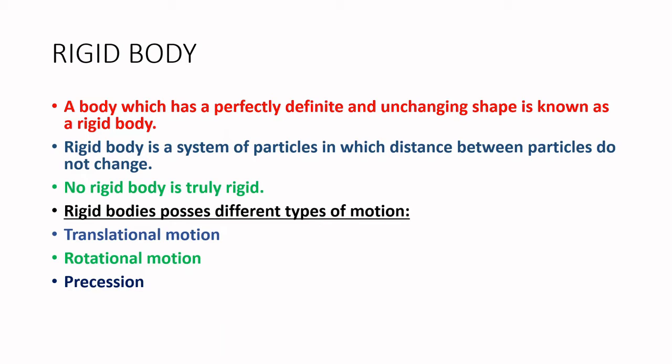Rigid bodies possess different types of motion. Translational motion, rotational motion, and precession are the three different types of motions possessed by rigid bodies.